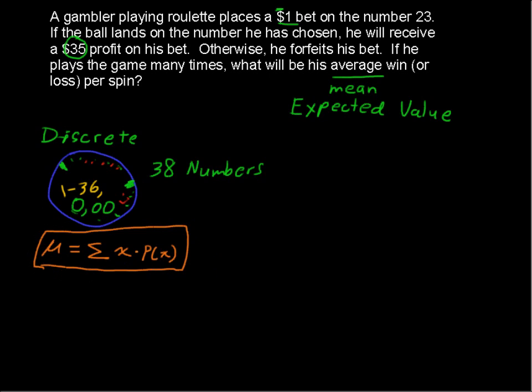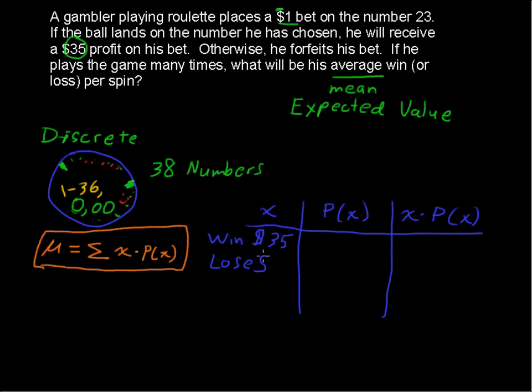So in the table, let's build a table here. And we have our possible x values, the probability of that x, and then we'll do x times the probability of that value. So if the gambler wins, he gets a profit, a positive $35. If he loses, he loses $1. So that's negative $1.